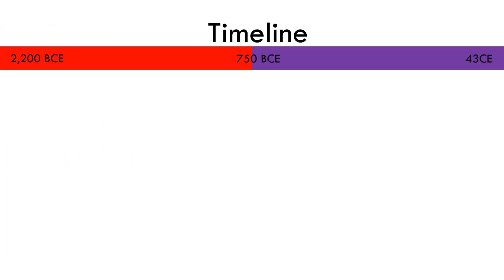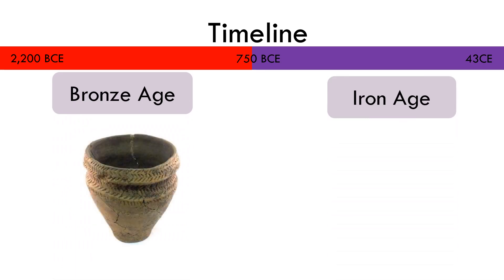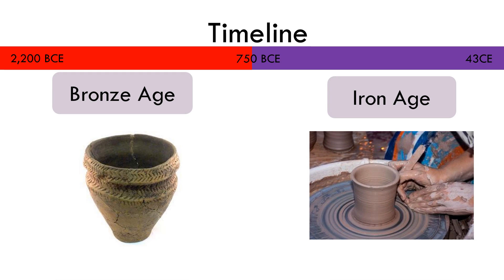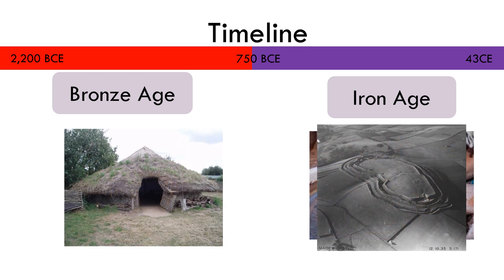A timeline can be useful in showing us the way that societies developed throughout the Bronze Age and Iron Age — from the tools they developed and made to the homes they lived in. We can see the differences and similarities in the way people lived throughout this time.